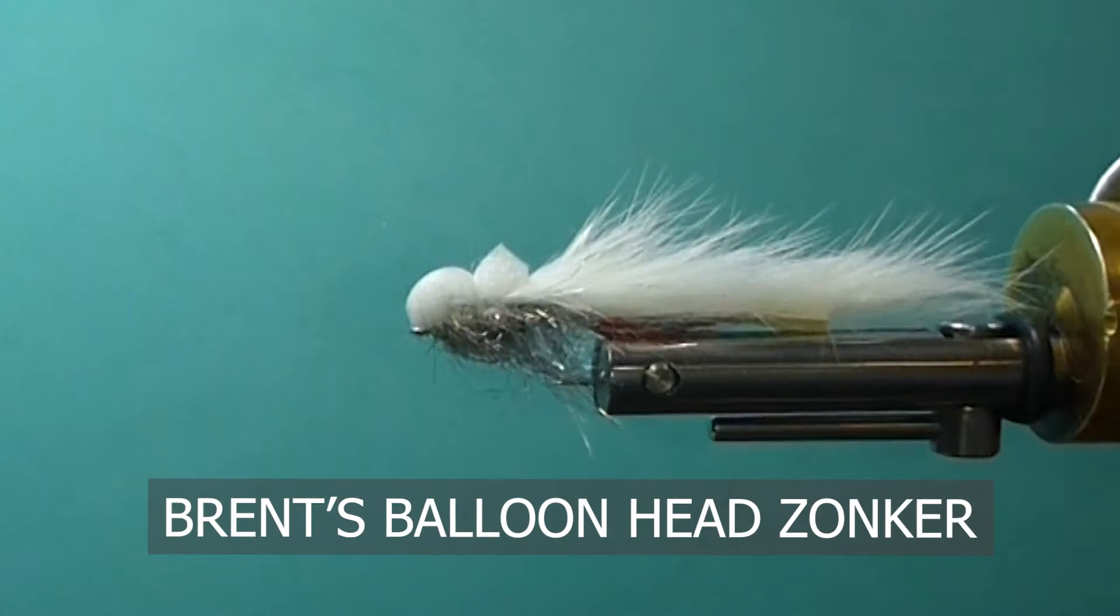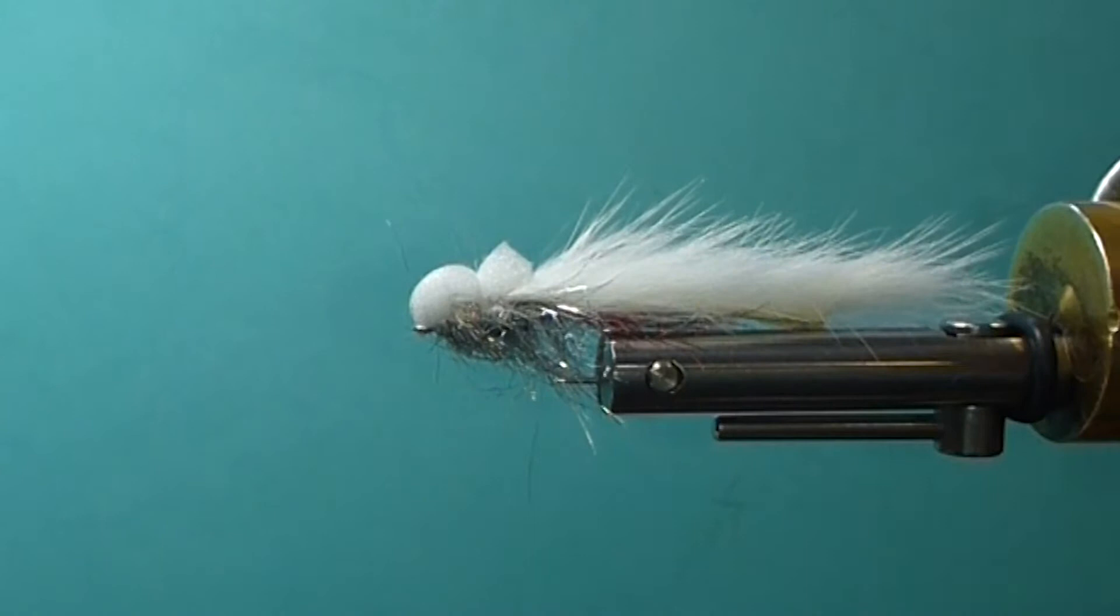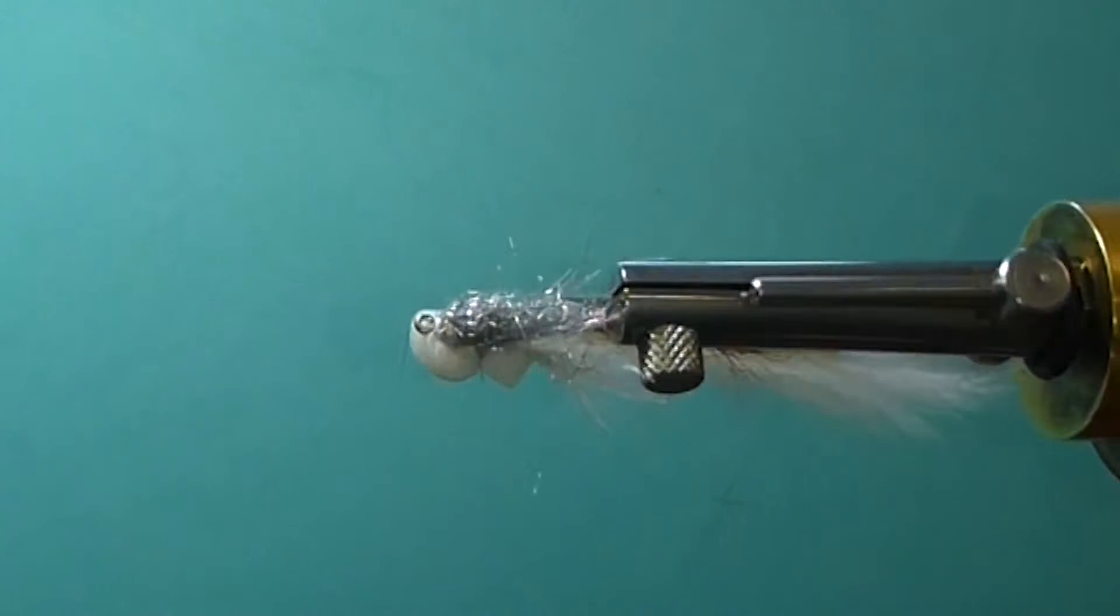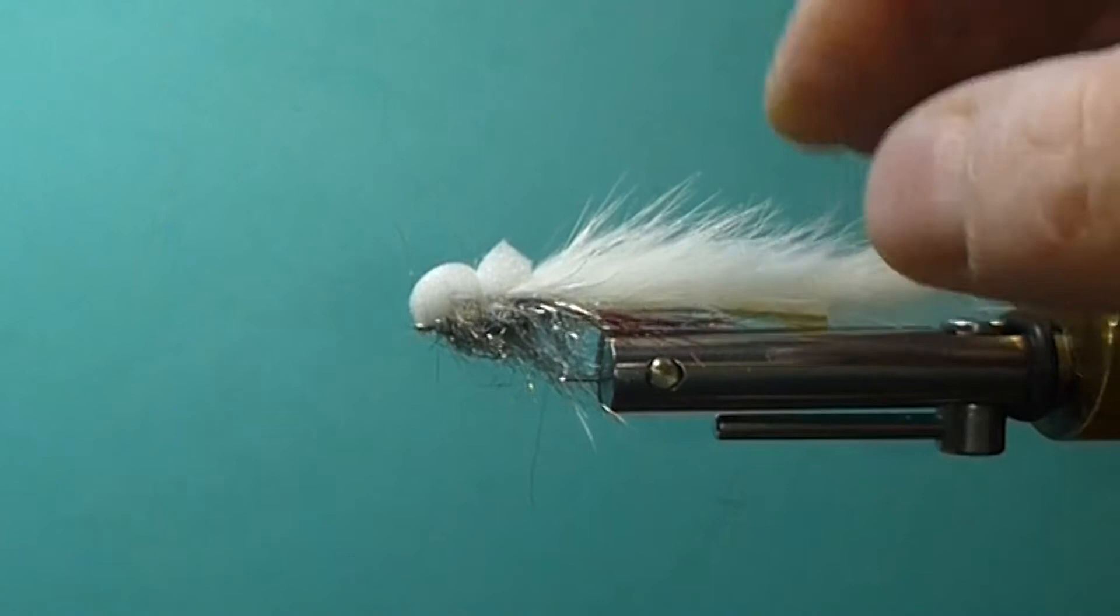It basically came across, we've seen it originally tied in England, a fella called it the booby zonker, tied it with booby eyes. I know David Burns up here at Golden, just up the road from me, he ties the fly with the booby eyes, calls it the anaconda. It's been very successful for him and many others of us that have fished it.